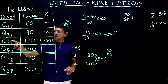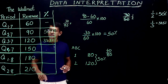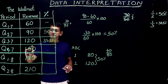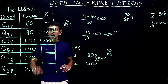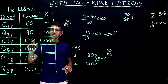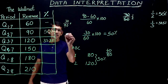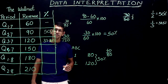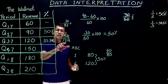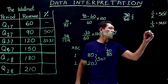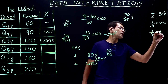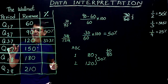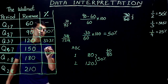Next: quarter 3 2017 to quarter 4 2017. 120 to 150 — the increase is 30. The base year is 120. So 30 by 120 equals 3 by 12, which is 1/4. 1/4 of 100 is 25 percentage. So from quarter 3 to quarter 4 2017, the increase is 25 percentage.